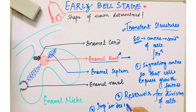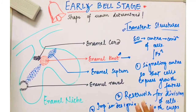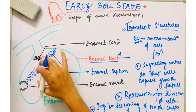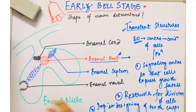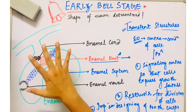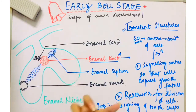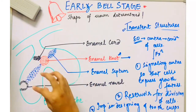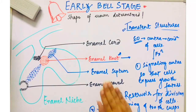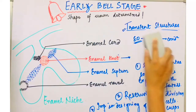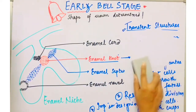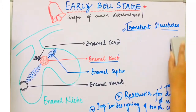The third function of the enamel knot is that it is also very important in designing of tooth cusps. So there are three functions of the enamel knot, which is present in the center of the enamel organ and is formed due to the condensation of cells: first, it acts as a signaling center so that cells can express their growth factors; second, it acts as a reservoir for division of cells; and third, it is important in designing the tooth cusps.